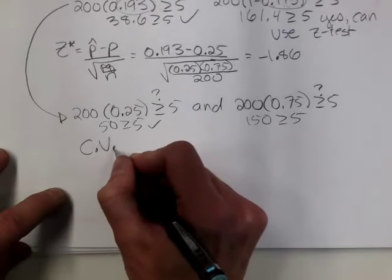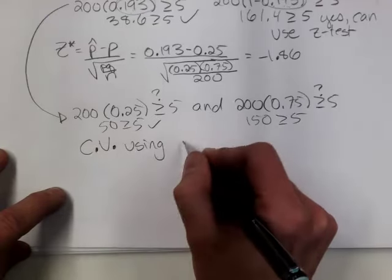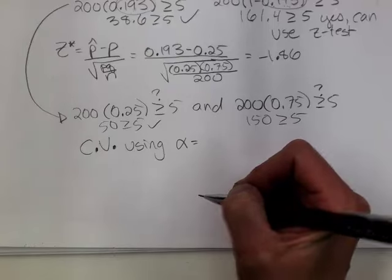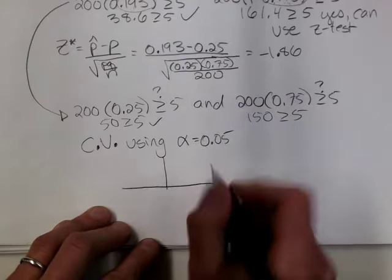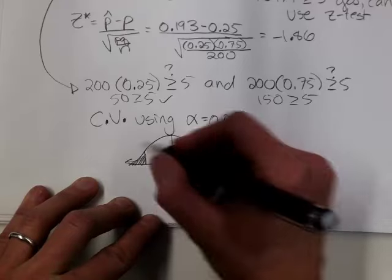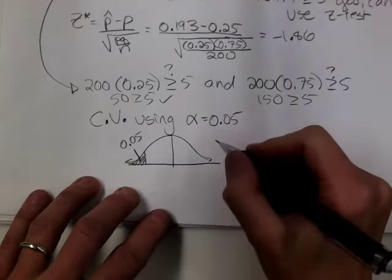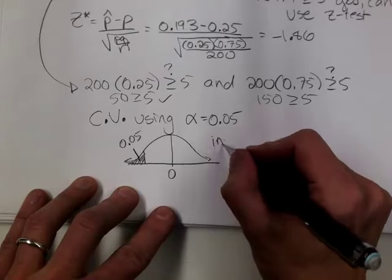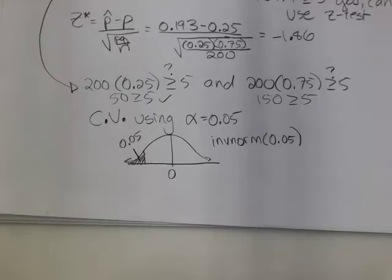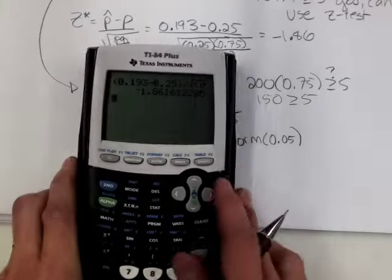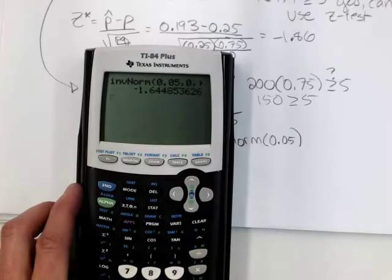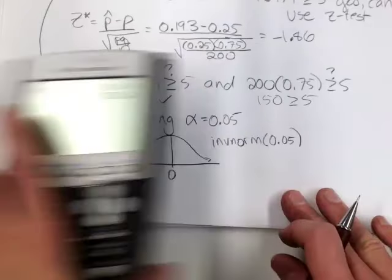My level of significance is .05, and it's a lower tail test — I know that by looking at the alternative. So I'm going to shade a lower tail and indicate an area of .05. Because I'm using the z-distribution, I can use inverse norm with a cumulative area of .05, or read the body of the table to get as close to .05 as possible. Do you get negative 1.645? Yes. That's a common one.